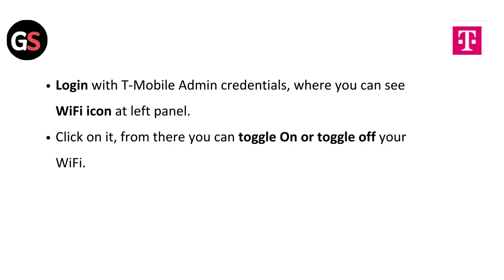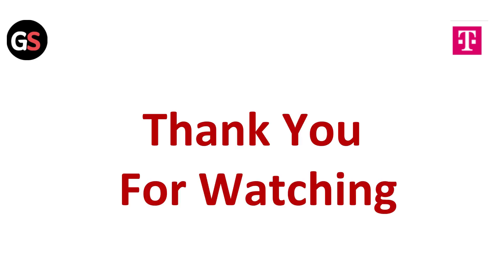Log in with your T-Mobile admin credentials, where you can see the Wi-Fi icon at the left panel. Click on it. From there, you can toggle on or toggle off your Wi-Fi. Thanks for watching this video.